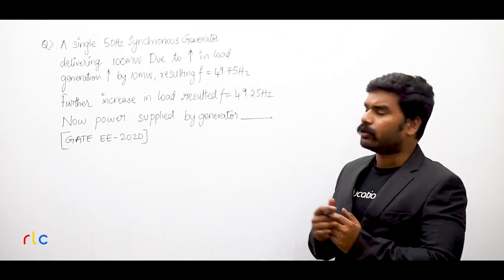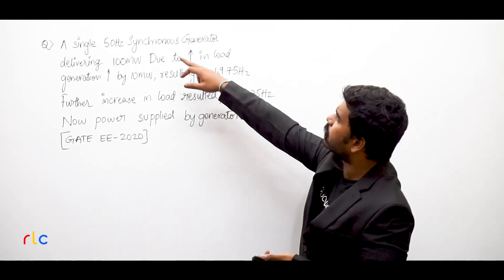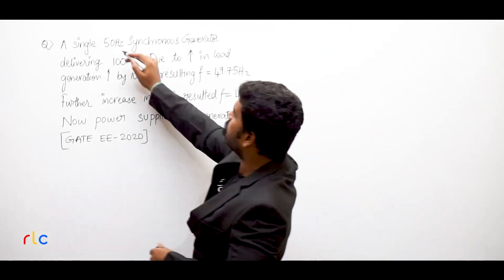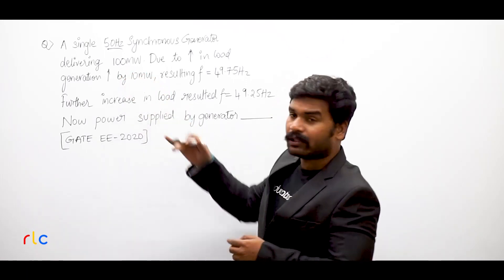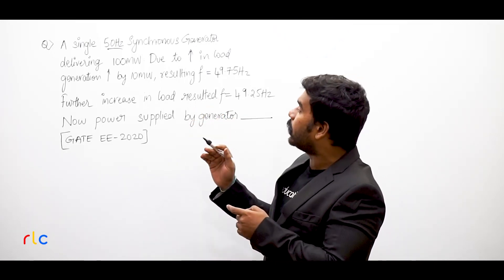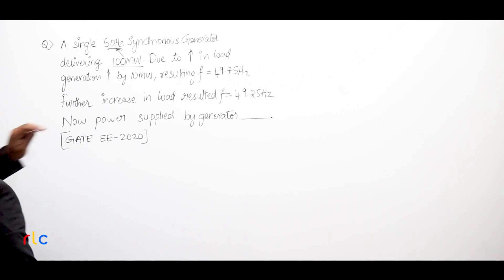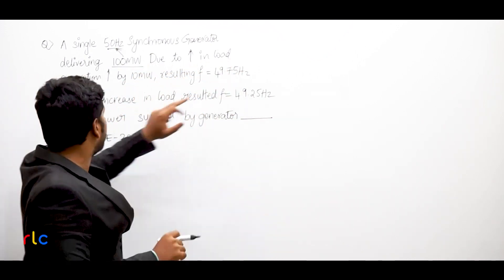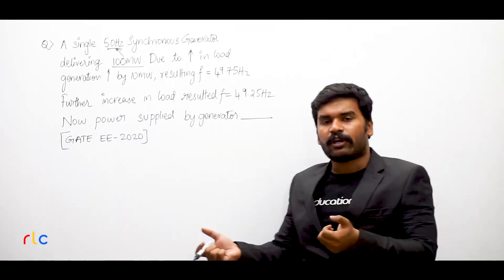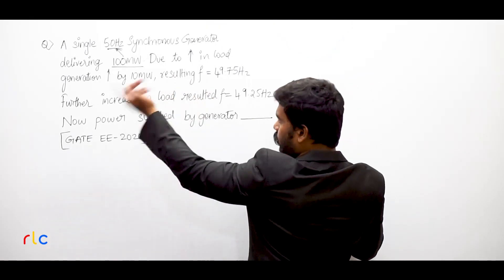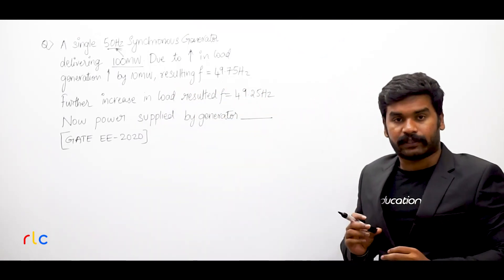Regarding load frequency control, this is the kind of question you encounter. The gist of this question is: there is a 50 Hz synchronous generator delivering 100 megawatts, meaning its operating frequency is 50 Hz. Due to an increase in load, the generation also increases by 10 megawatt, resulting in a frequency of 49.75 Hz.